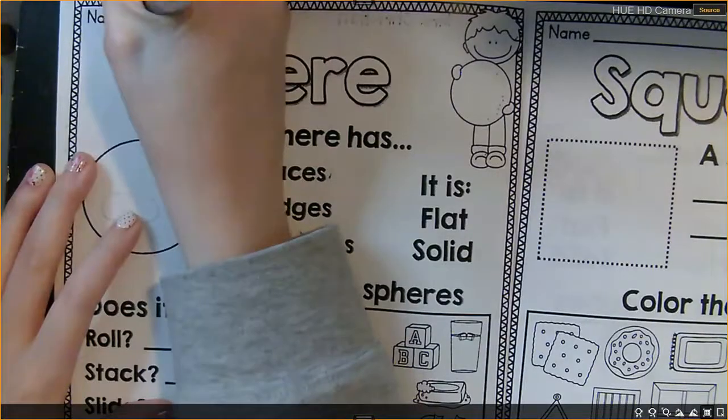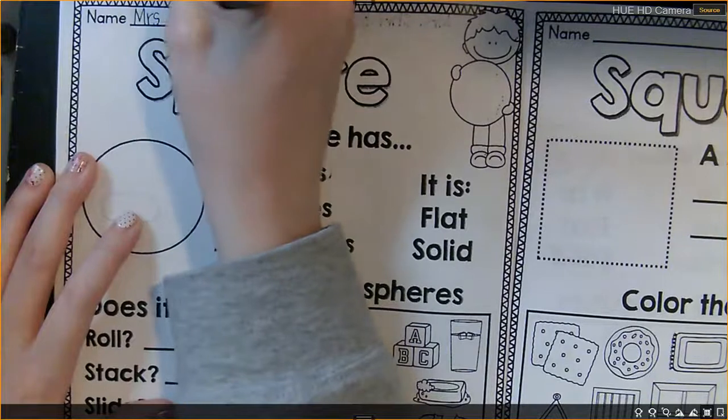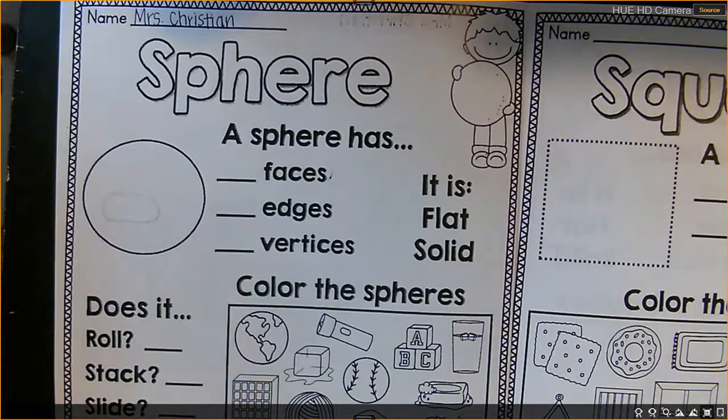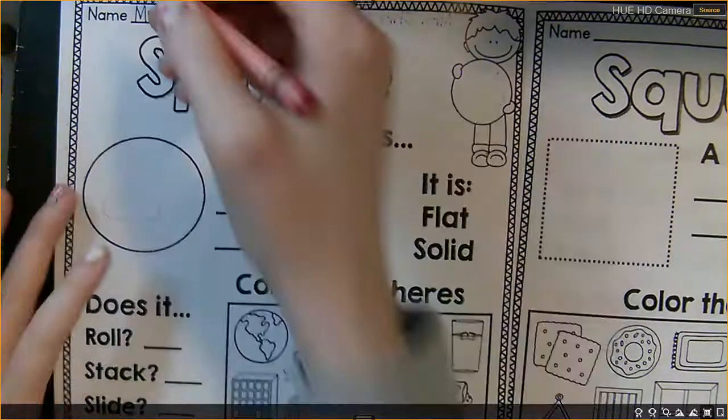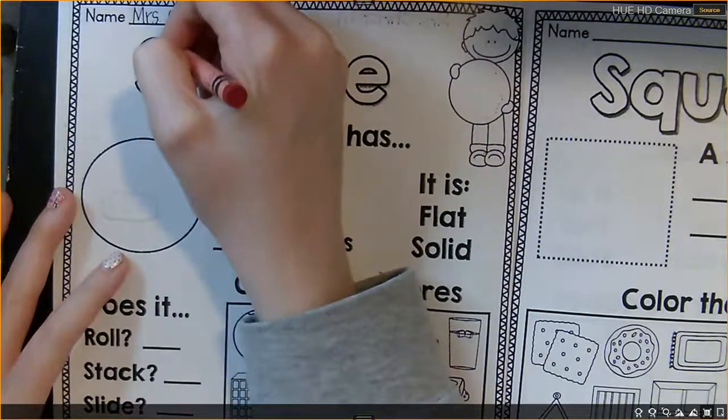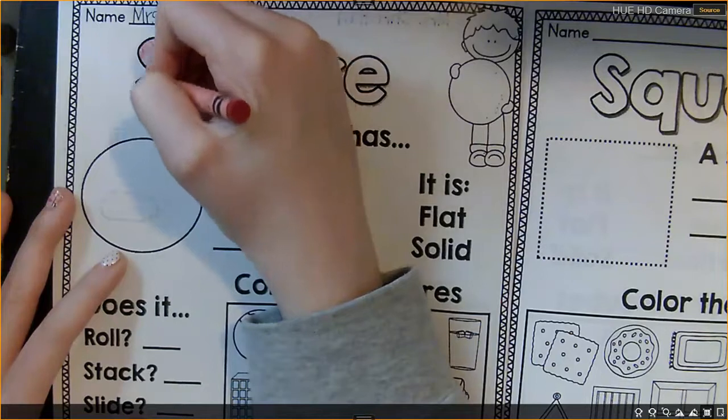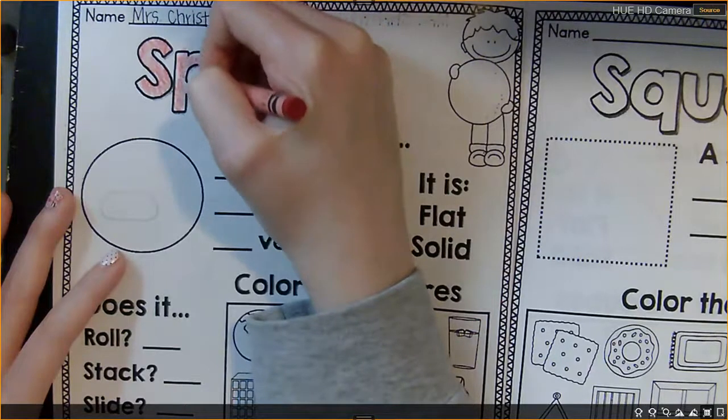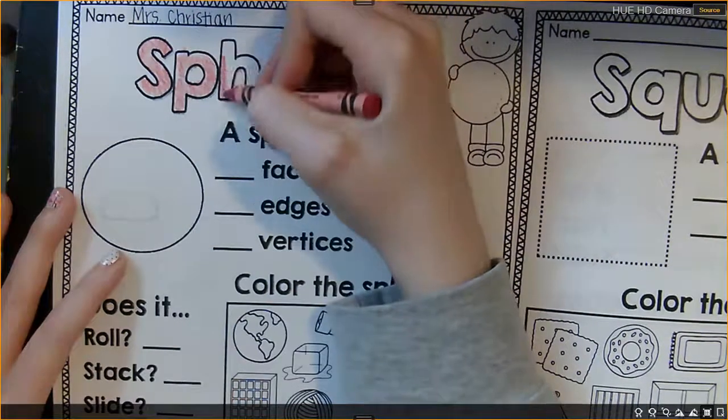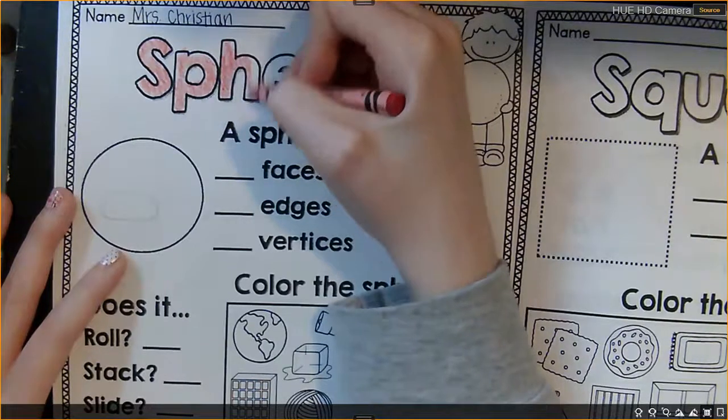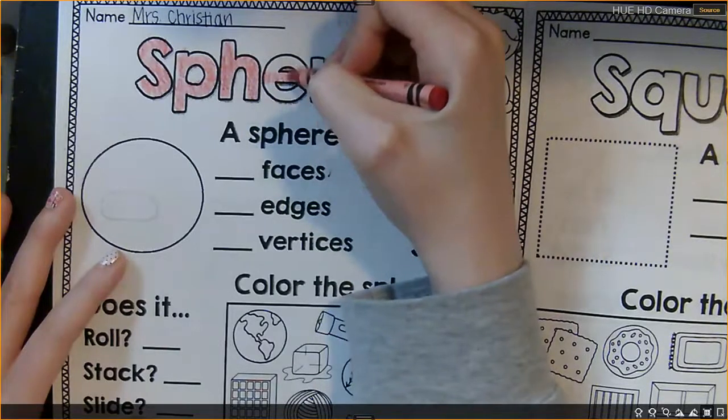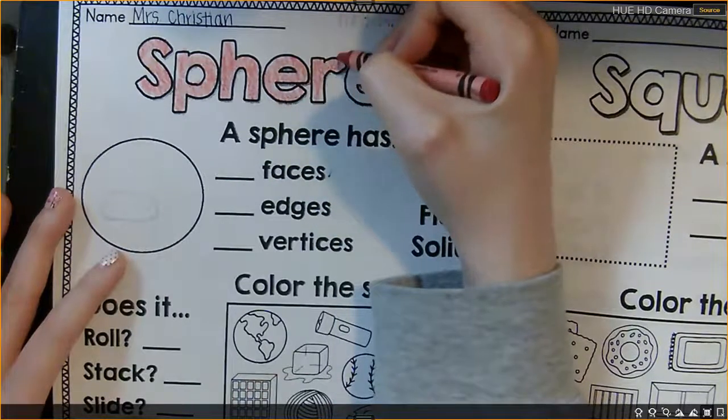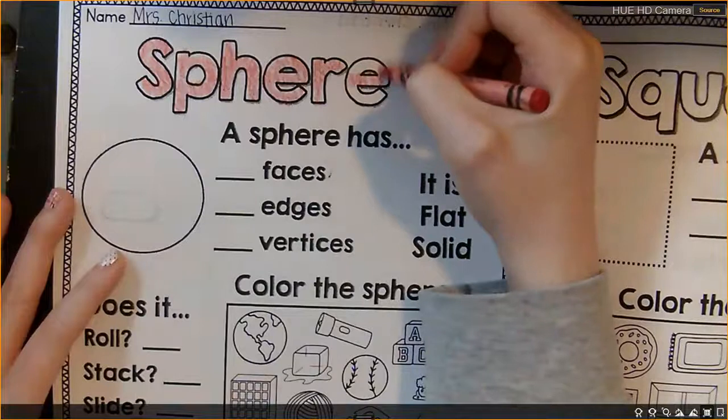We're going to write our name again. And we'll go ahead and we'll color the word sphere. And I'm going to use the same crayon that I used for the circle. A sphere is spelled S-P-H-E-R-E. Sphere.